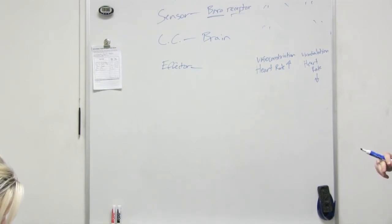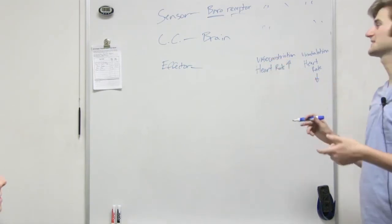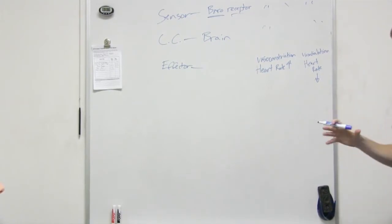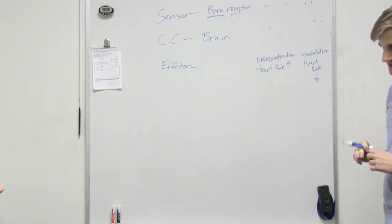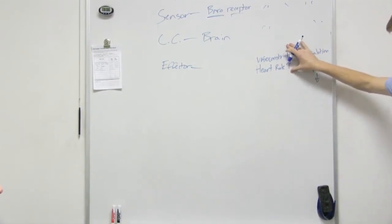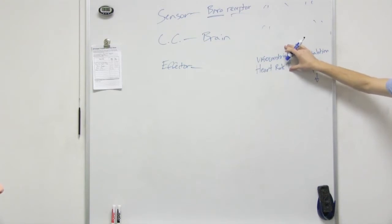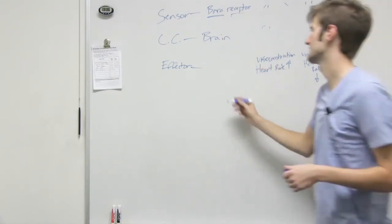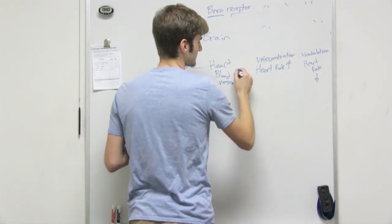So are vasoconstriction and vasodilation the hormones? No, they're the effectors, because the blood vessels are doing this. The blood vessels are performing vasoconstriction and vasodilation, so the blood vessels are the effector. The heart is another effector, because it's the one raising its rate or not. So you could say the effectors are the heart and blood vessels.